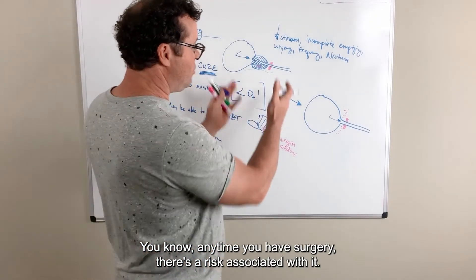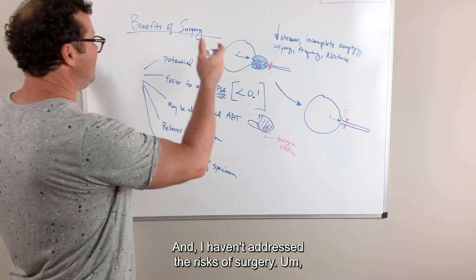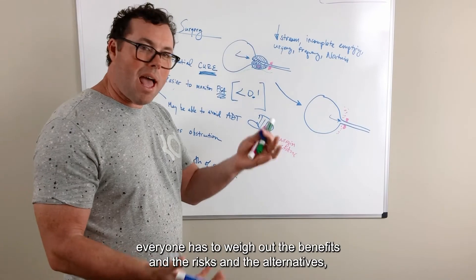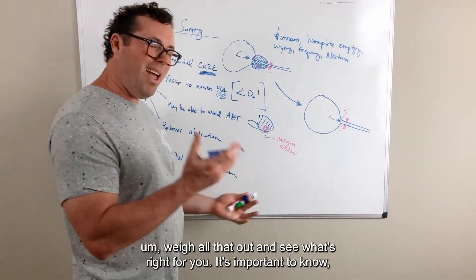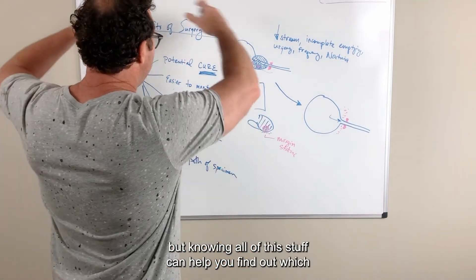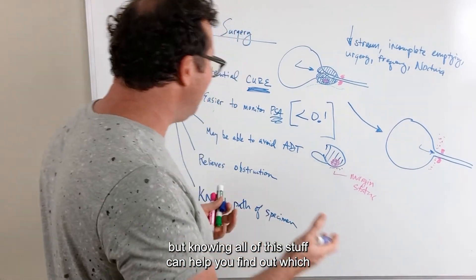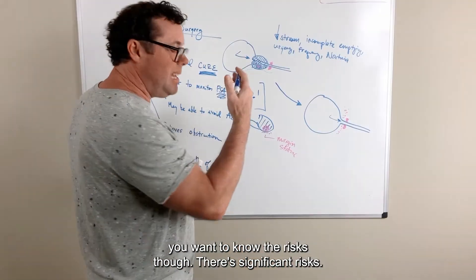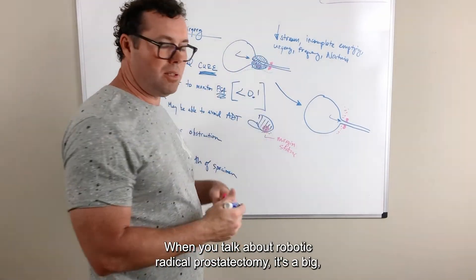Anytime you have surgery, there's a risk associated with it, and I haven't addressed the risks of surgery. Again, everyone has to weigh out the benefits and the risks and the alternatives. Weigh all that out and see what's right for you. It's important to know. But knowing all of this stuff can help you find out which treatment option is best for you. You want to know the risks, though. There's significant risks when you talk about robotic radical prostatectomy.